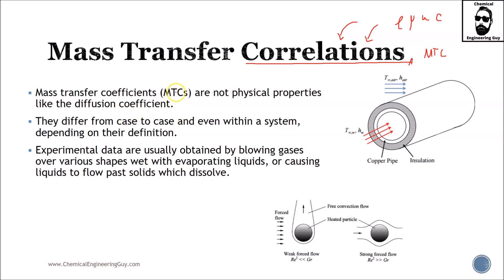Mass transfer coefficients, MTC, are not physical properties like diffusion coefficient. So this is very important to differ. Diffusion coefficient is actually a physical property of any substance and mass transfer coefficient is rather a construct or an equation that relates that.